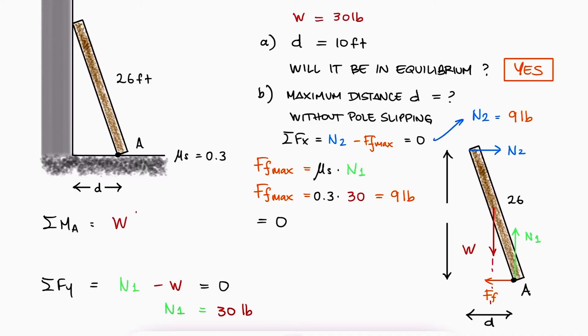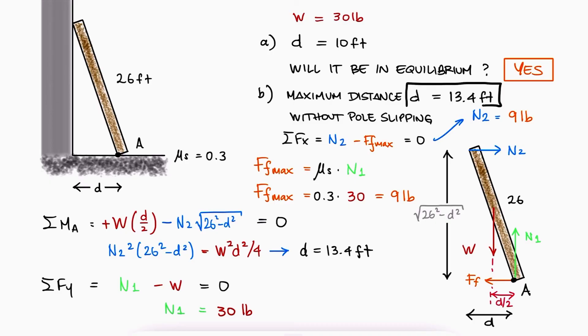For the sum of moments about A, we would see the weight at a distance D over 2 counterclockwise, and N2 at a distance that we can find with the Pythagorean theorem clockwise. Solving for D, we would find that the distance has to be equal to 13.4 feet.